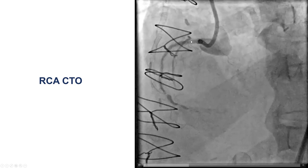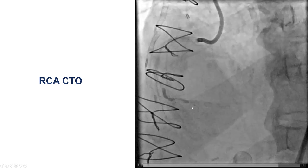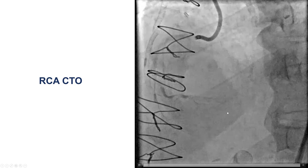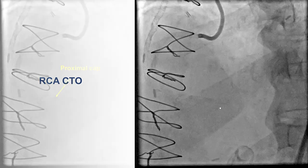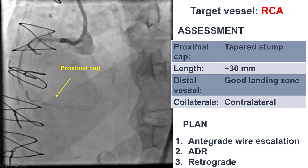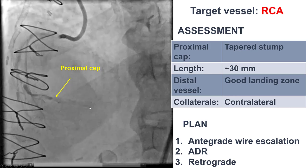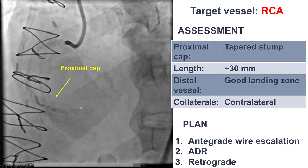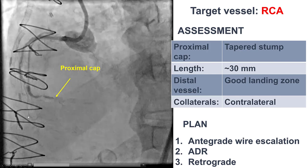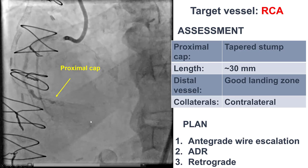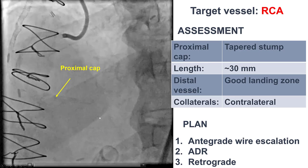This is the angiography of the native right coronary artery. It is occluded distally, right proximal to a previously placed stent. It does have a clear proximal cap. The length was about 30 mm — the length of the stent. There was flow going from the saphenous vein graft to the PDA, and the distal vessel was good, but there was a bifurcation on the distal cap.